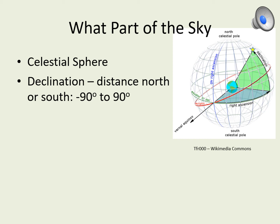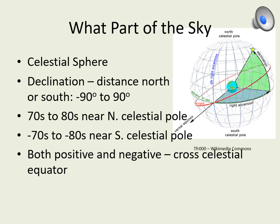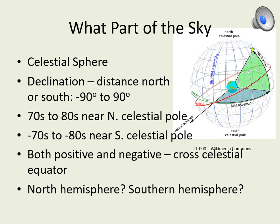Look at the declinations of the stars in your constellation. The first part of this question is asking you to describe what part of the celestial sphere the constellation is on. If the declinations are in the 70s or 80s, the star is near the North Celestial Pole. Similarly, if the declination is in the minus 70s or 80s, it's near the South Celestial Pole. If some stars have negative declinations while others have positive values, then the constellation crosses the Celestial Equator. If it doesn't fit any of these descriptions, say if it's in the northern or southern half of the celestial sphere.